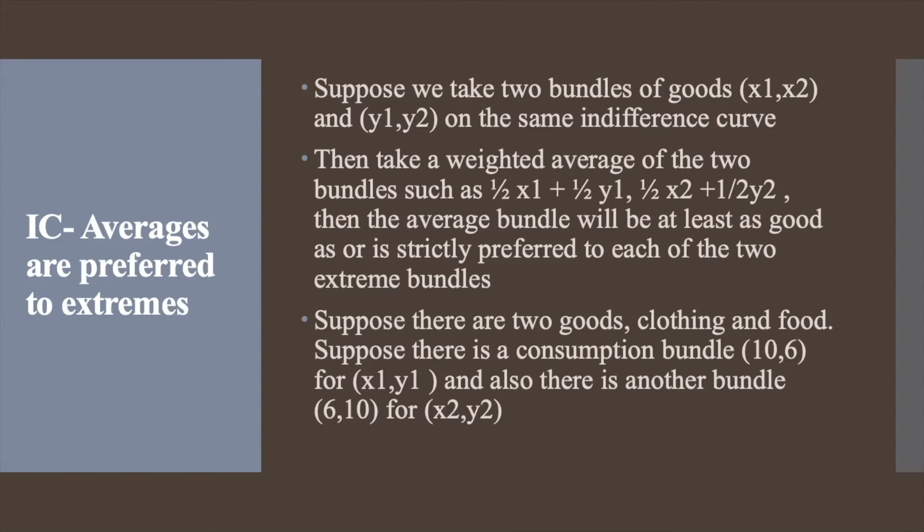Secondly, it is assumed that averages are preferred to extremes. That is, if we take two bundles of goods (x1, x2) and (y1, y2) on the same indifference curve and take a weighted average of the two bundles.